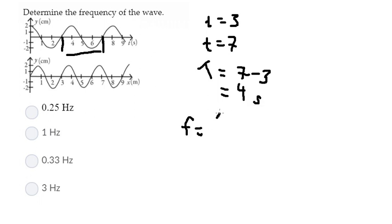f equals 1 over T. We have 1 over 4, and that is about 0.25 hertz.